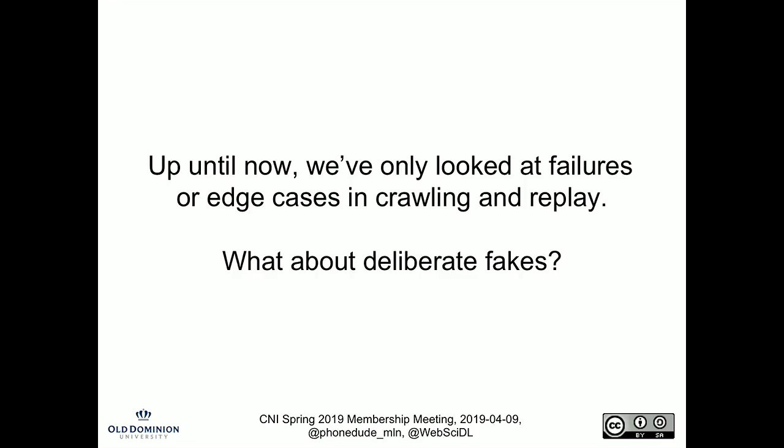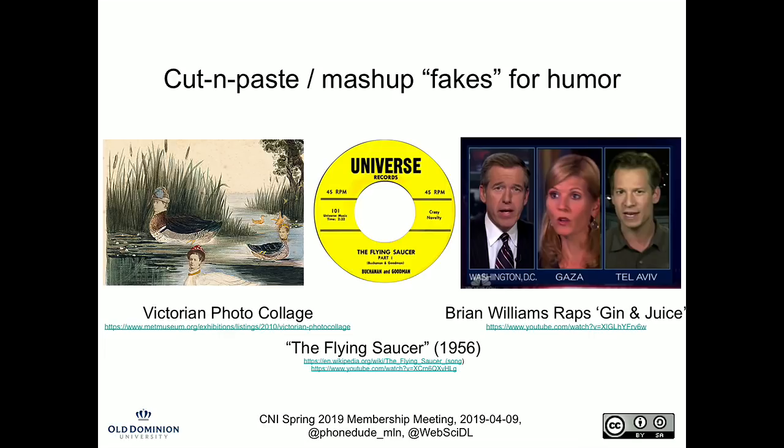Up until this point, we've looked at failures of crawling and failures at replay that produce weird results. Let's talk about deliberate fakes. We've had deliberate fakes for some time — Victorian photo collage, copy and paste to make funny music videos. The one on the right is Brian Williams rapping Gin and Juice, a Snoop Dogg song from 1993. It's hilarious. Clearly this is done for comedic effect, and because we have the cultural context, we know it's not real.